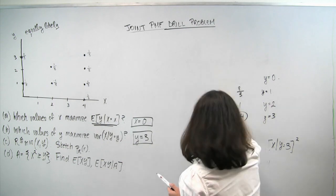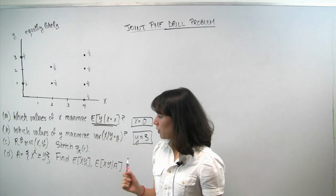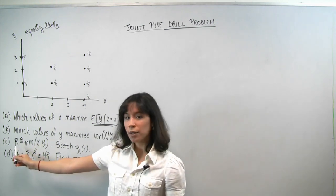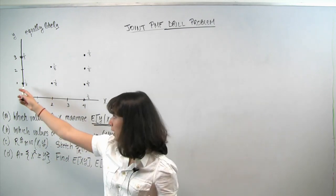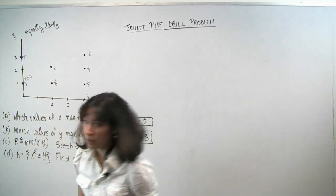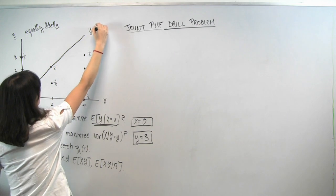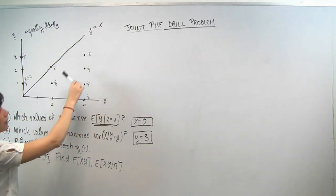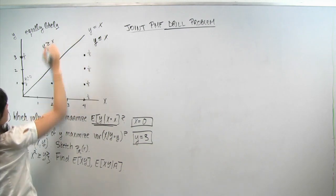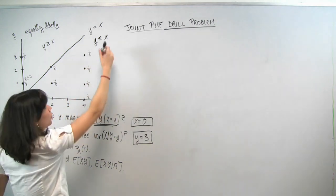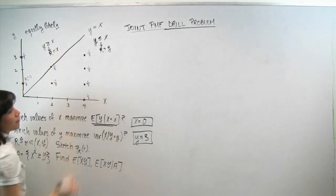Now we switch gears to parts C and D. In part C, we're given a new random variable r defined as the minimum of x and y. For instance, at the point (0,1), the minimum of 0 and 1 is 0, so r=0 there. We can be smarter by plotting the line y=x. All points below this line satisfy y ≤ x, where r equals y; all points above have y ≥ x, where r equals x.